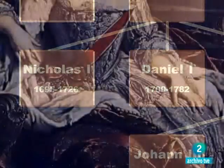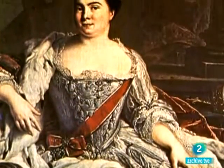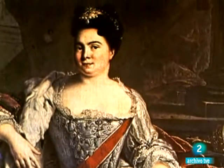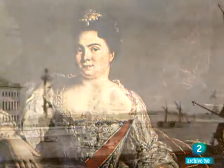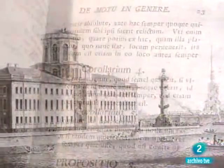Nicolaus y Daniel fueron fichados por Catalina la Grande como profesores de matemáticas de la recién creada Academia de San Petersburgo. Y éstos llamaron a Euler para ocupar una plaza de profesor de medicina. No es tan extraño, ya que Euler había estudiado, además de matemáticas, teología, astronomía, medicina, física y lenguas orientales.